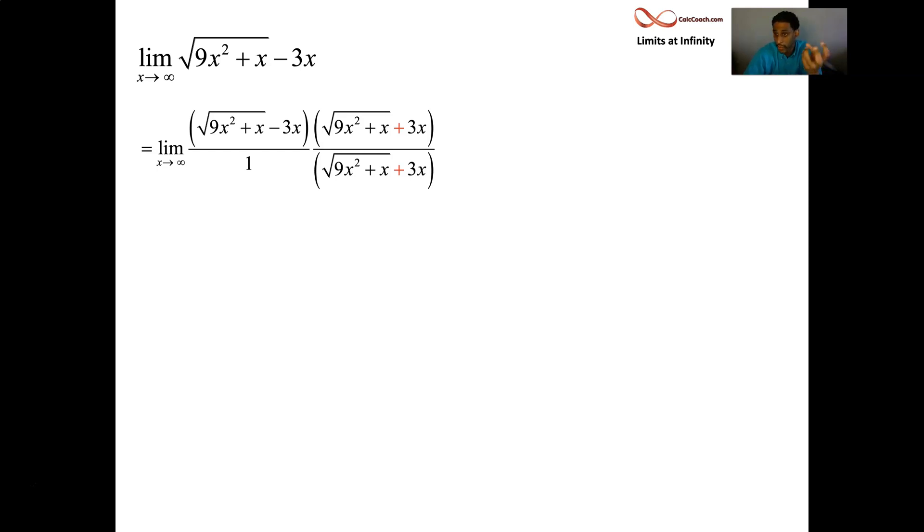When you FOIL out the numerator, you get 9x squared plus x, and then you get minus 9x squared. Don't forget the fact that there's a negative times a positive 3x. So the 9x squares cancel. The original function, as x goes to infinity, behaves the same way as this function does, and we can treat this function like we did the last question.